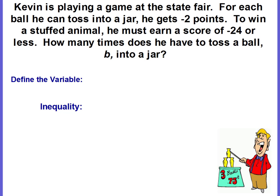So what is the unknown? The unknown is how many times the ball needs to be tossed into a jar. And we're actually given the variable B. So let's define it. We're going to let B equal the number of balls in a jar.